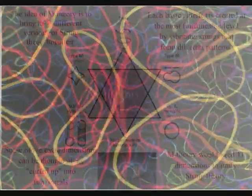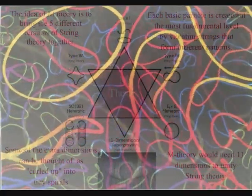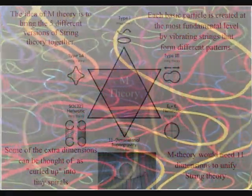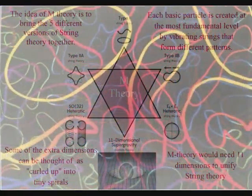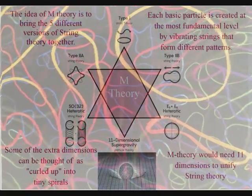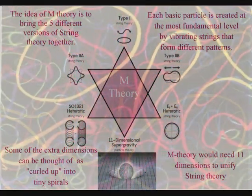The idea of M-theory is to bring the five different versions of string theory together. String theory is supposed to be a theory of everything, so there should be only one version, not five.